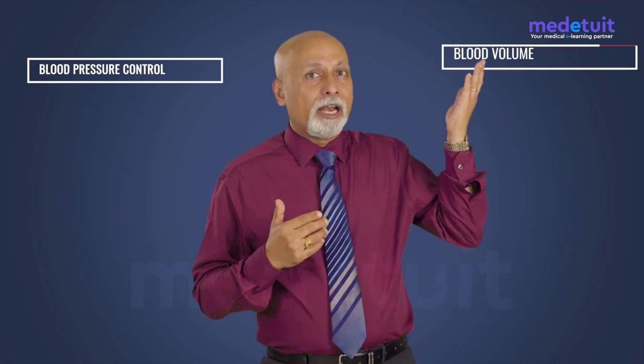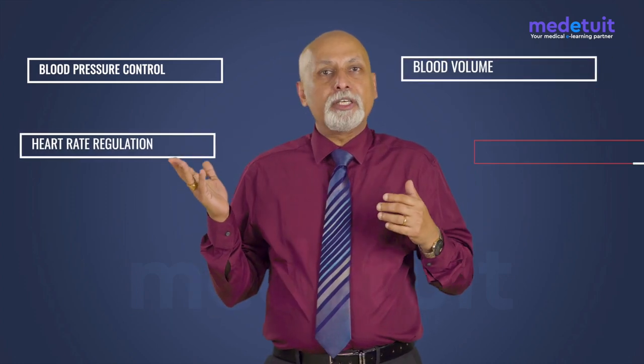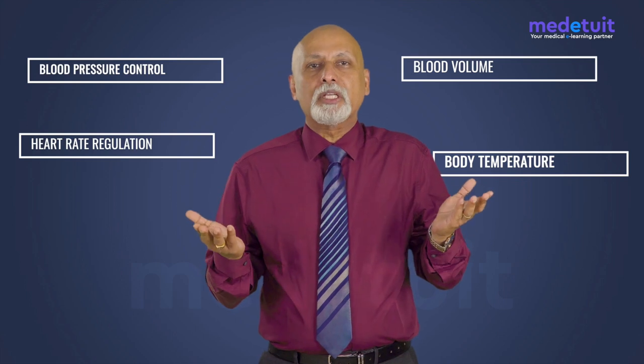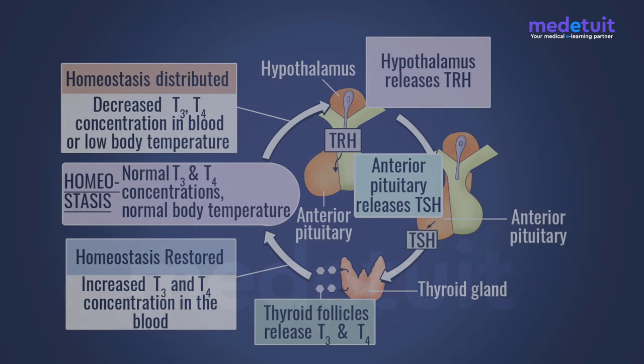Examples of negative feedback systems include blood pressure control, blood volume, heart rate regulation, body temperature, and many more mechanisms. As mentioned, the majority of hormones in the body are also well regulated through negative feedback.